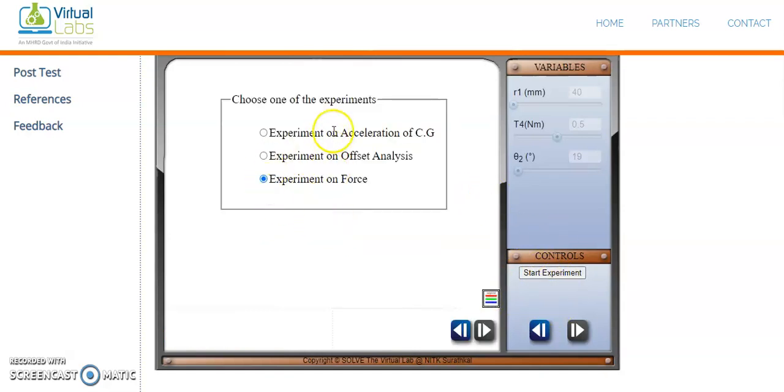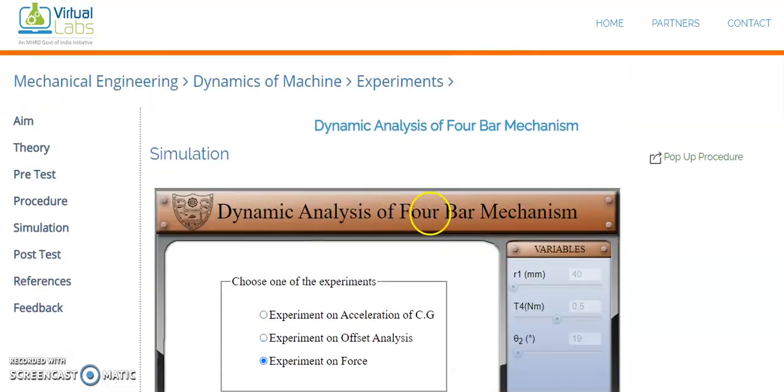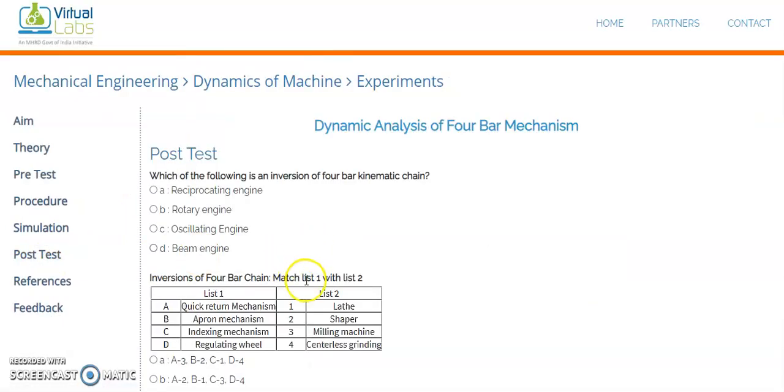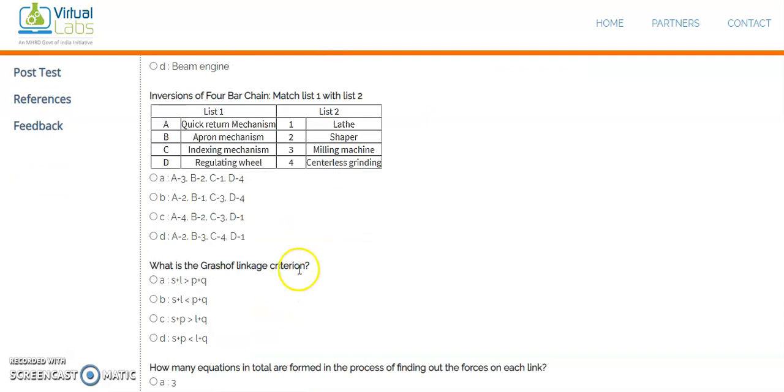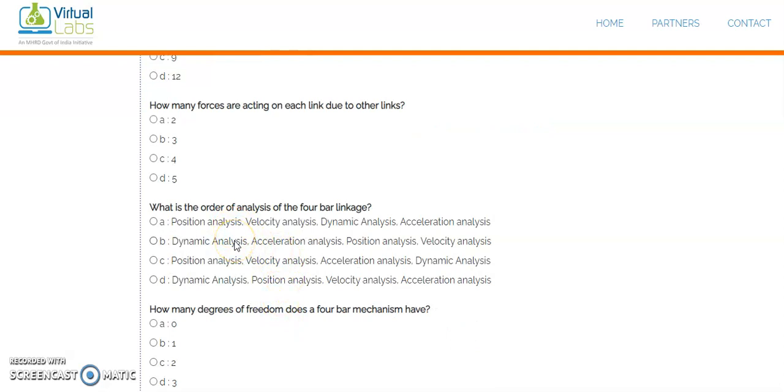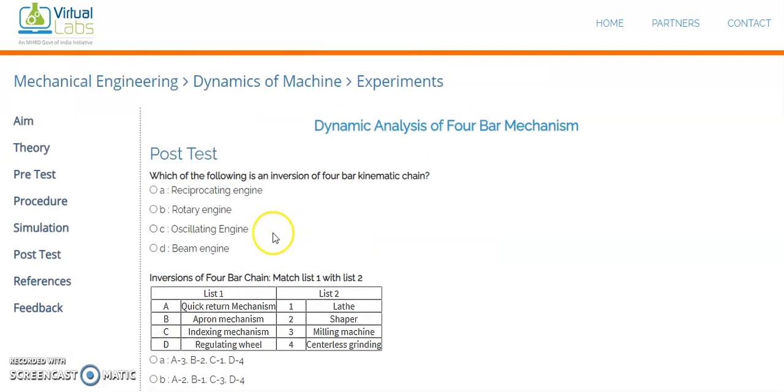Exit this experiment. Likewise, we have to choose the experiment on dynamic analysis of four bar mechanism. After the simulation, we will have one post-test. For this post-test, there will be some questions which are available. We can work out all the questions and answer them. This is what actually the dynamic analysis of four bar mechanism has been done in the virtual lab model.